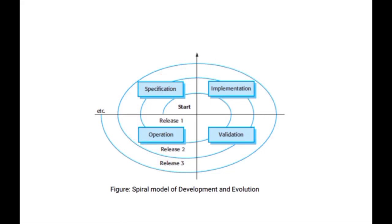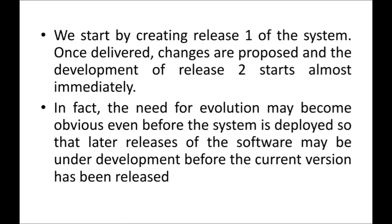Each version released will contain some bug fixes, error corrections, or new additions of features. We start by creating Release 1 of the system. Once delivered, changes are proposed and the development of Release 2 starts almost immediately. If any changes are needed after Release 1 is delivered, we will do those changes and immediately release the second version.